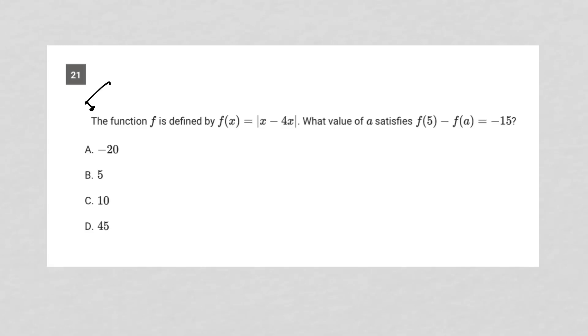So this question says the function f is defined by f of x equals the absolute value of x minus 4x. And then it asks, what value of a satisfies f of 5 minus f of a equals negative 15?